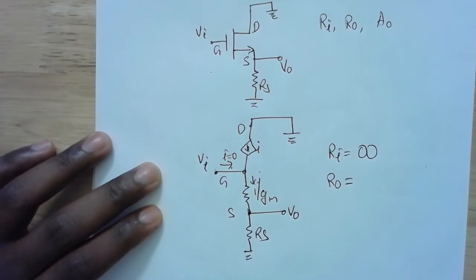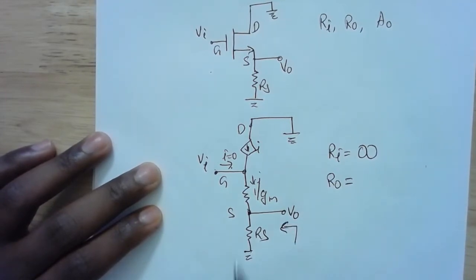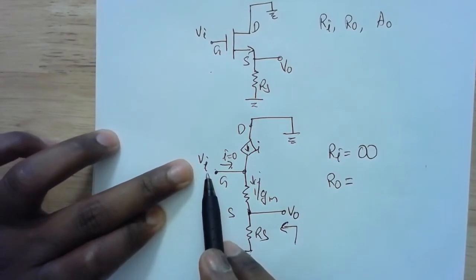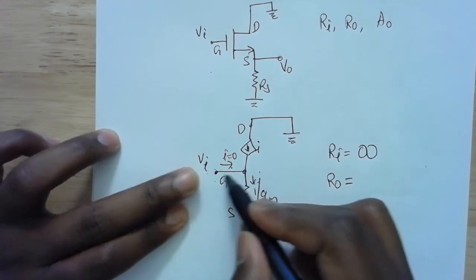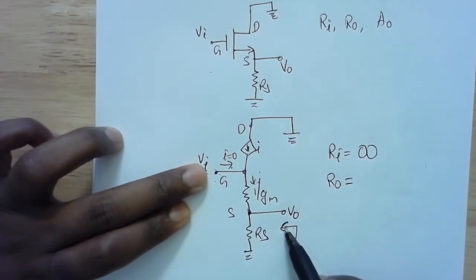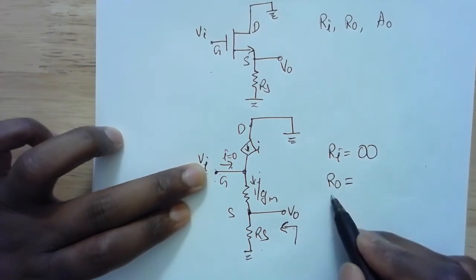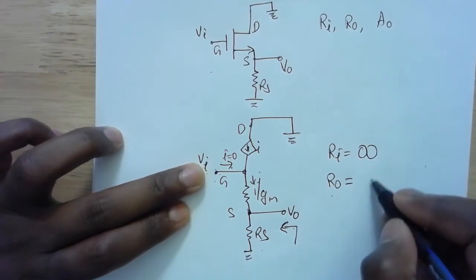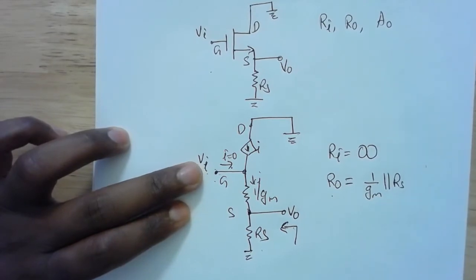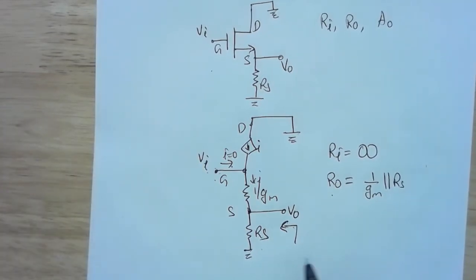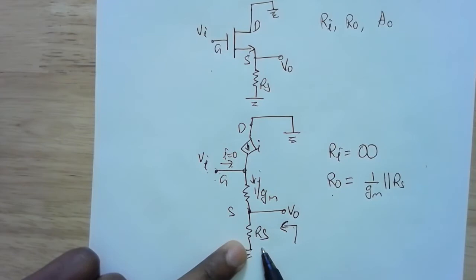To measure output impedance, set all your input sources to zero and measure the current looking into the output. That means VI will be grounded. Looking from the output, 1/gm and RS are in parallel, so my output impedance will be 1/gm parallel with RS.